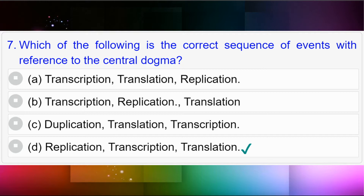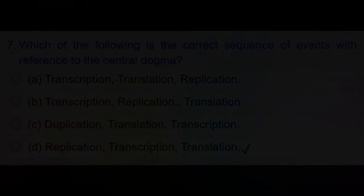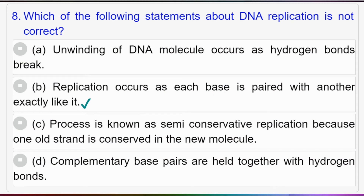Question number seven: Which of the following is the correct sequence of events with reference to the central dogma? Option A: transcription, translation, replication; option B: transcription, replication, translation; option C: duplication, translation, transcription; option D: replication, transcription, translation. Answer to question number seven is option D: replication, transcription, translation.